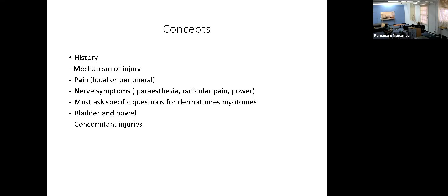Before we start, we need to recap some very important concepts. On history, mechanism of injury is very important because it describes how much power and force has gone through the spine. When looking at pain, you have to be very specific as to what dermatome is affected — the patient will say 'my arm is sore,' but you have to ask is it your thumb, your middle finger. Pain in the neck and pain on movement are big red flags hinting at something going on in the spine.